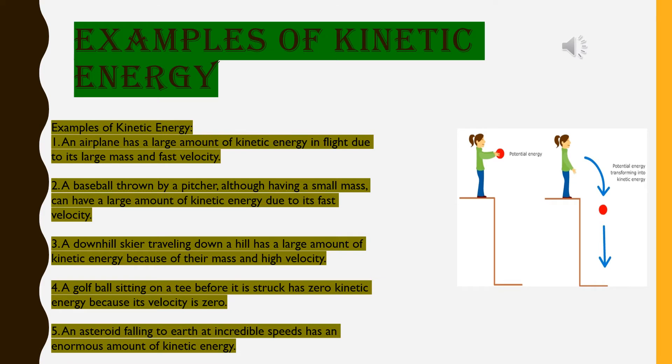Number four, a golf ball sitting on a tee before it is struck has zero kinetic energy because its velocity is zero. Number five, an asteroid falling to earth at incredible speeds has an enormous amount of kinetic energy. That means kinetic energy depends on the velocity and mass both.